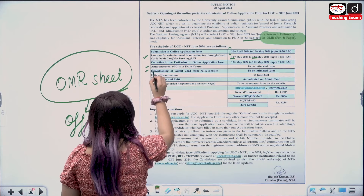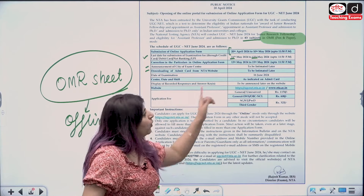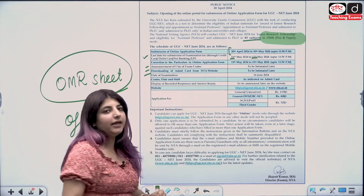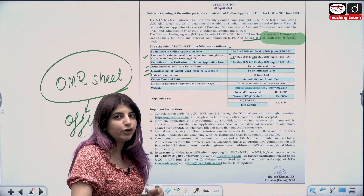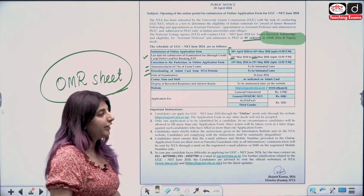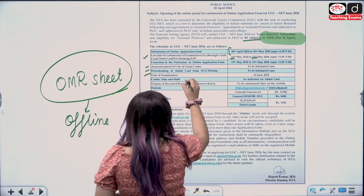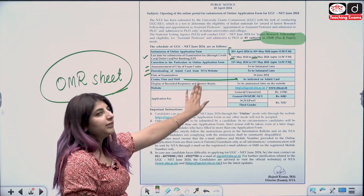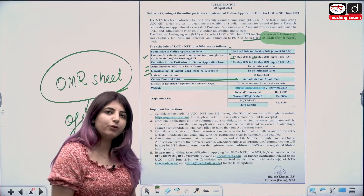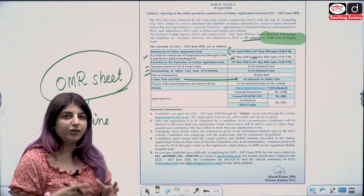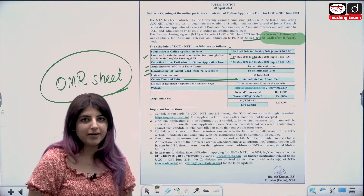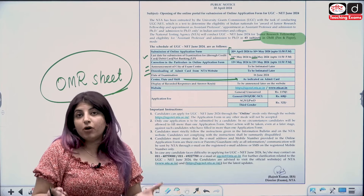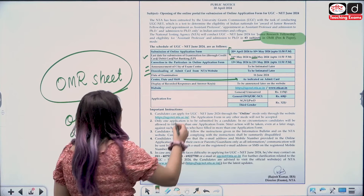The city announcement and admit card details will be shared later. The date of examination is 16th June 2024. Your admit card will come with your center date and shift. Record responses and answer keys will also be given — you will be able to download your answer keys and see your response sheet on the website.